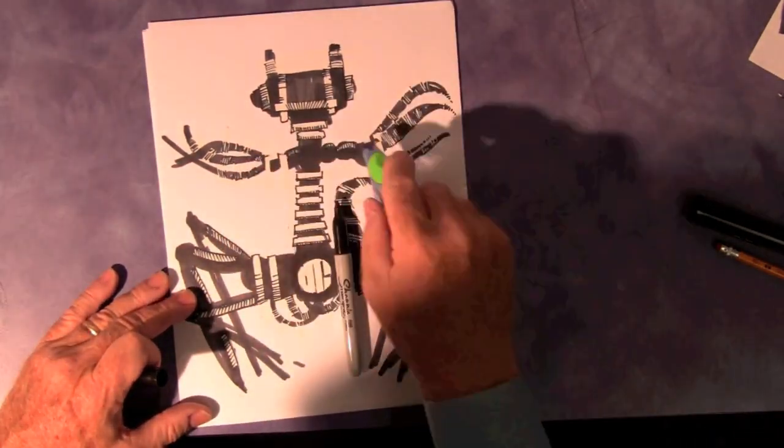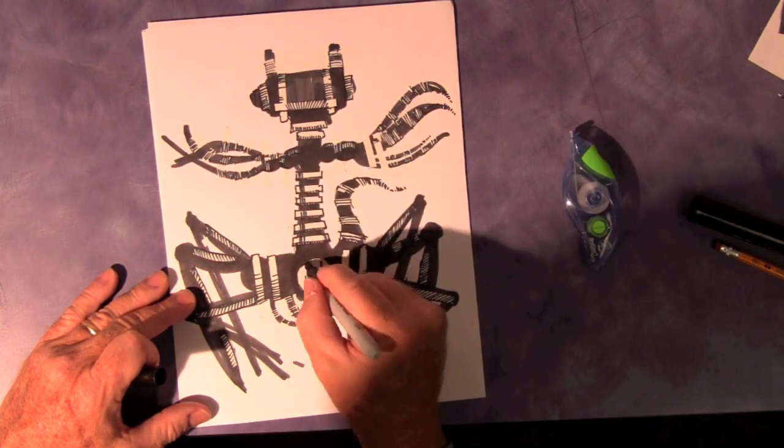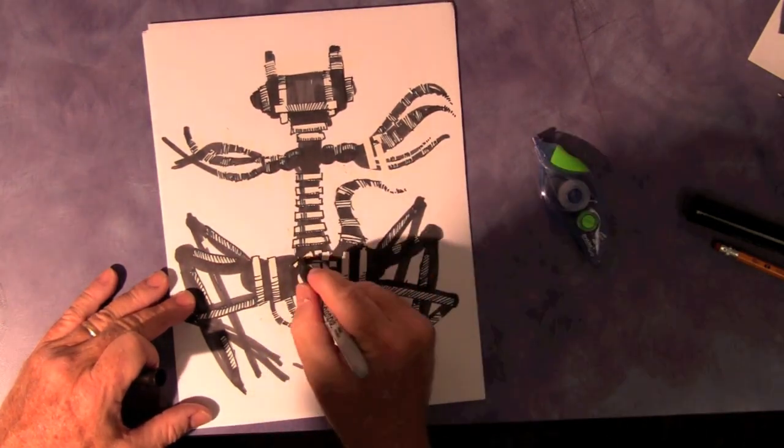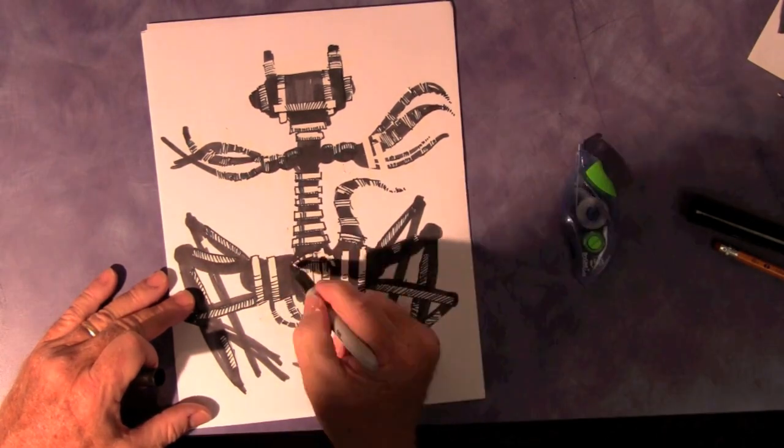Give it, again, the notion that it is a robot. That it's got a metallic sheen to it. It's not going to be a finished drawing. It's merely going to be a suggestion of what the kind of robotic nature of this would be.